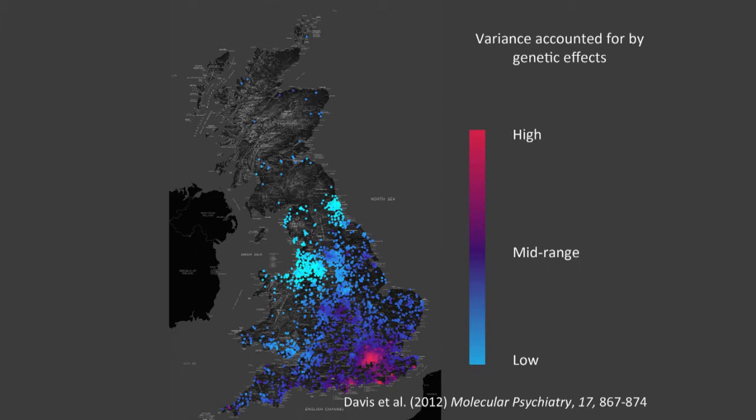In this map, we're looking at genetic influences — red is high. We can see a genetic hotspot in London for this particular trait and less genetic influence in the north of England.